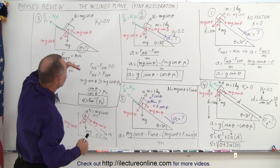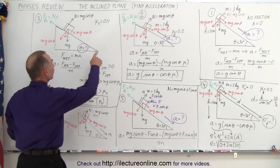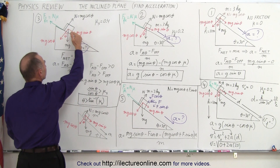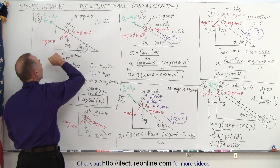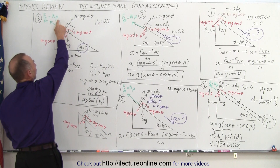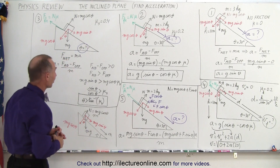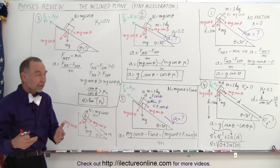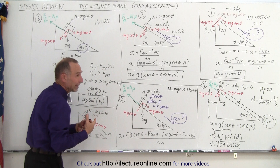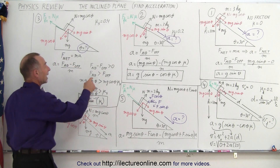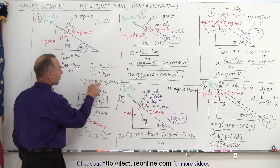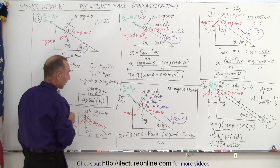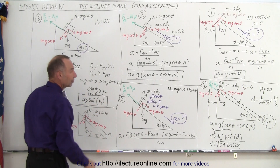Sometimes they ask how steep the angle must be before the object begins to slide. In that case we have static friction — let's say it's 0.4. We use the same approach: the object on the incline with weight mg, the parallel component mg sine theta, the perpendicular component mg cosine theta, the normal force, and the friction force which is the normal force times mu, or mg cosine theta times mu static. There can only be acceleration if the aiding force minus the opposing force is greater than zero. This means mg sine theta must be bigger than mg cosine theta times mu sub s. Simplifying, sine over cosine must be bigger than mu sub s, or tangent must be bigger than mu sub s. So the angle must be bigger than the inverse tangent of the coefficient of static friction.